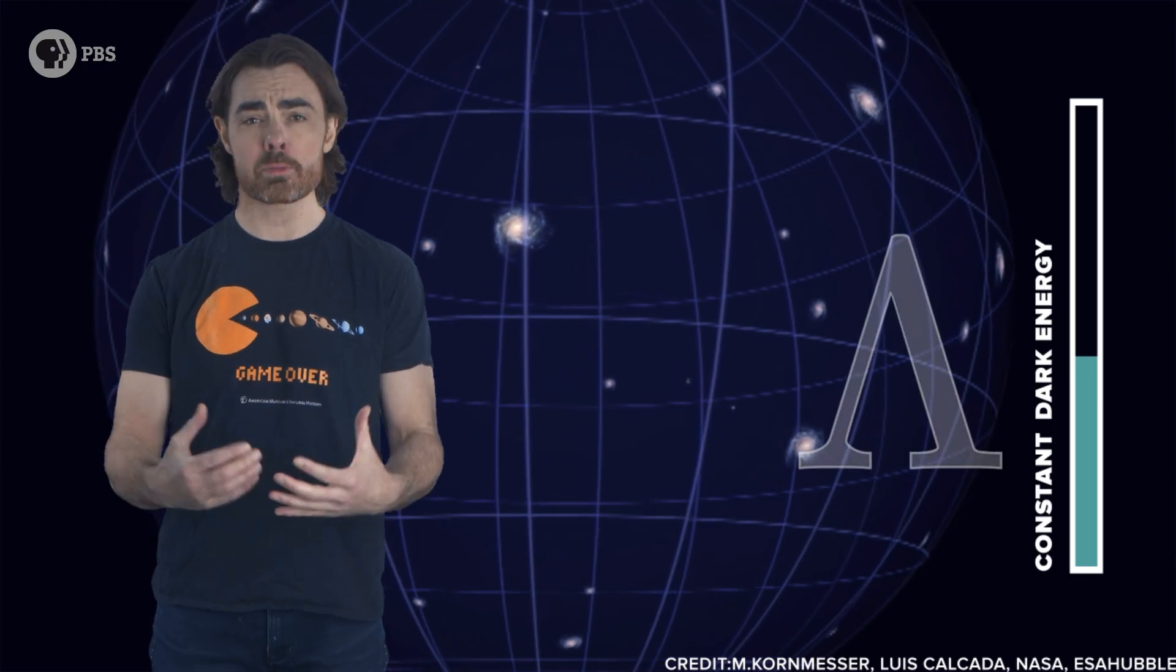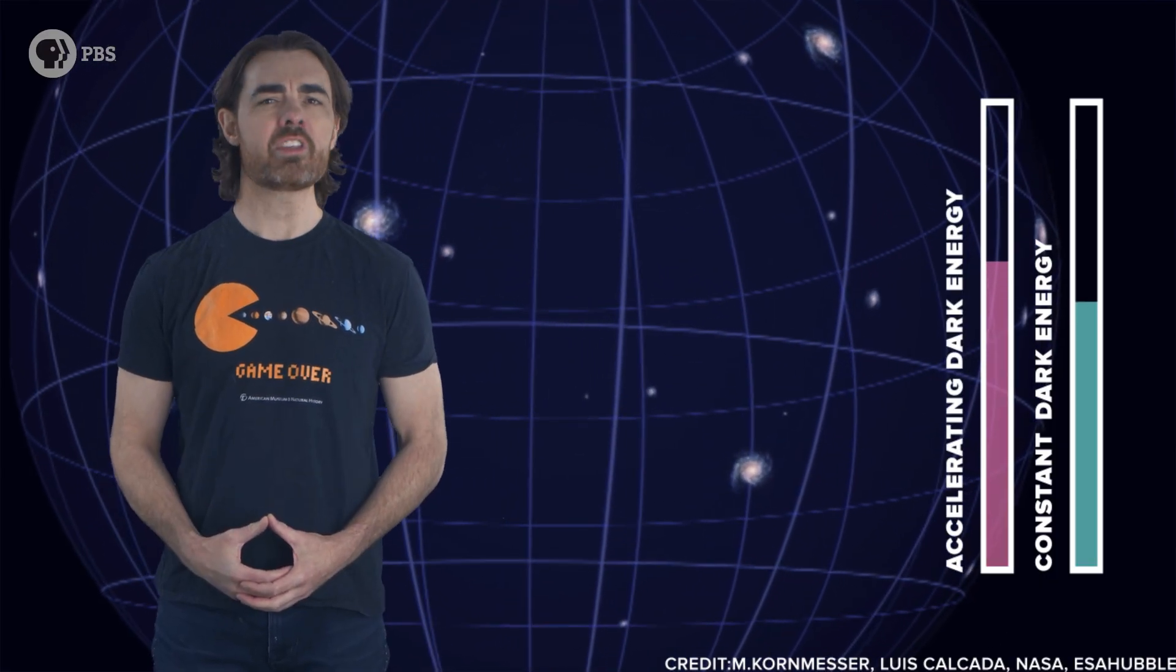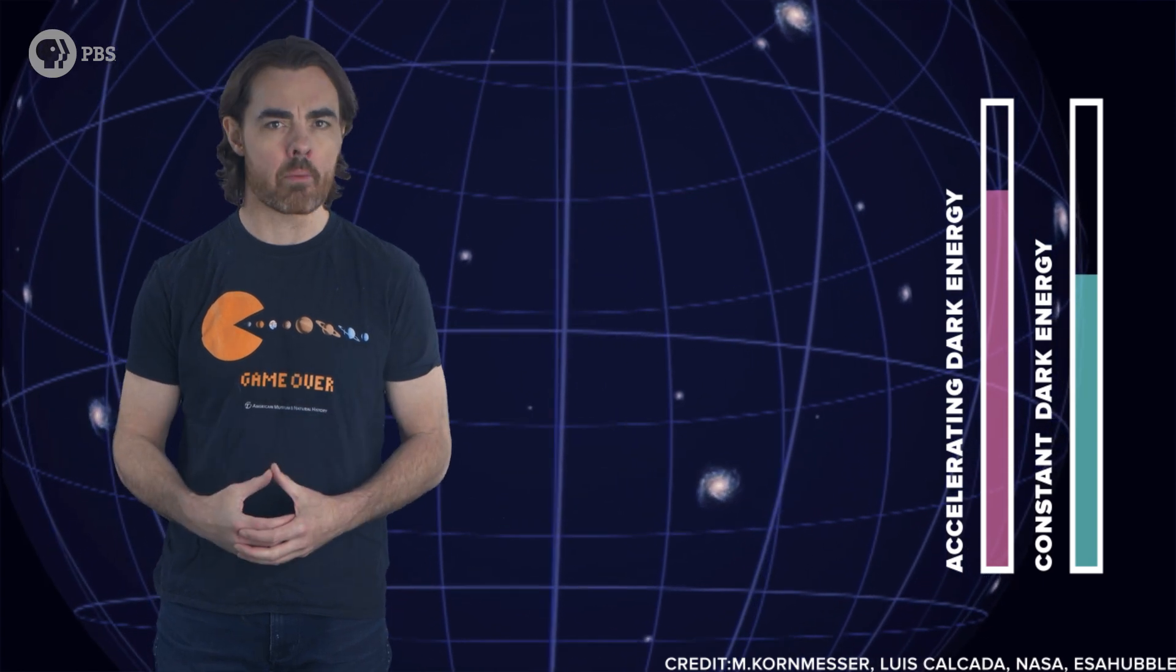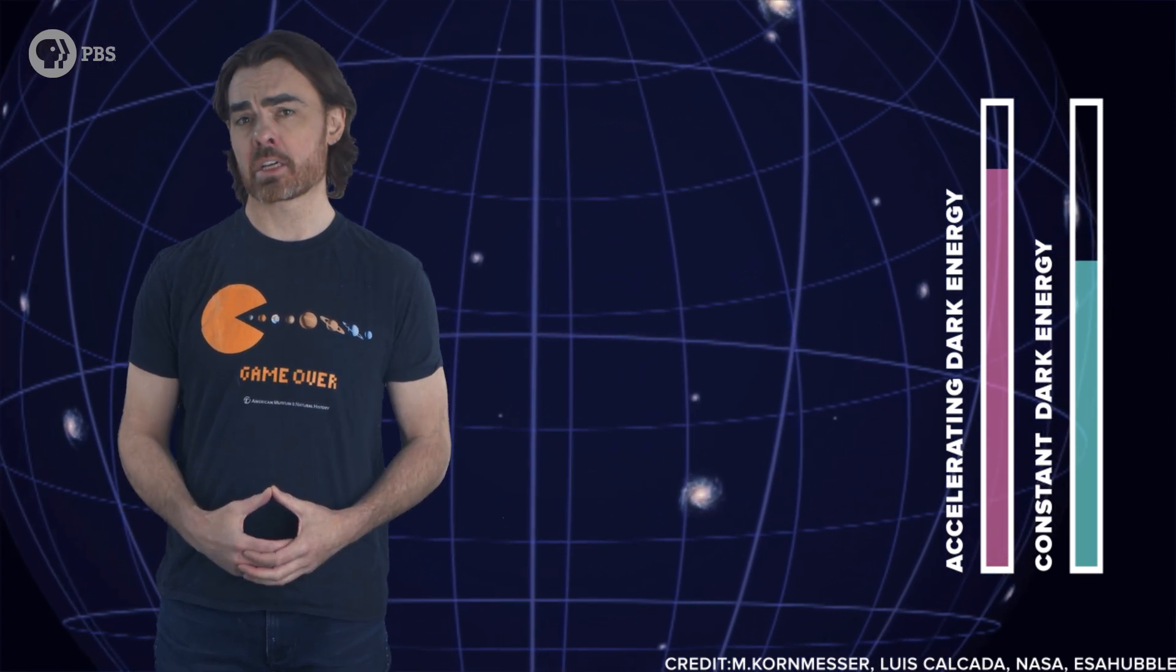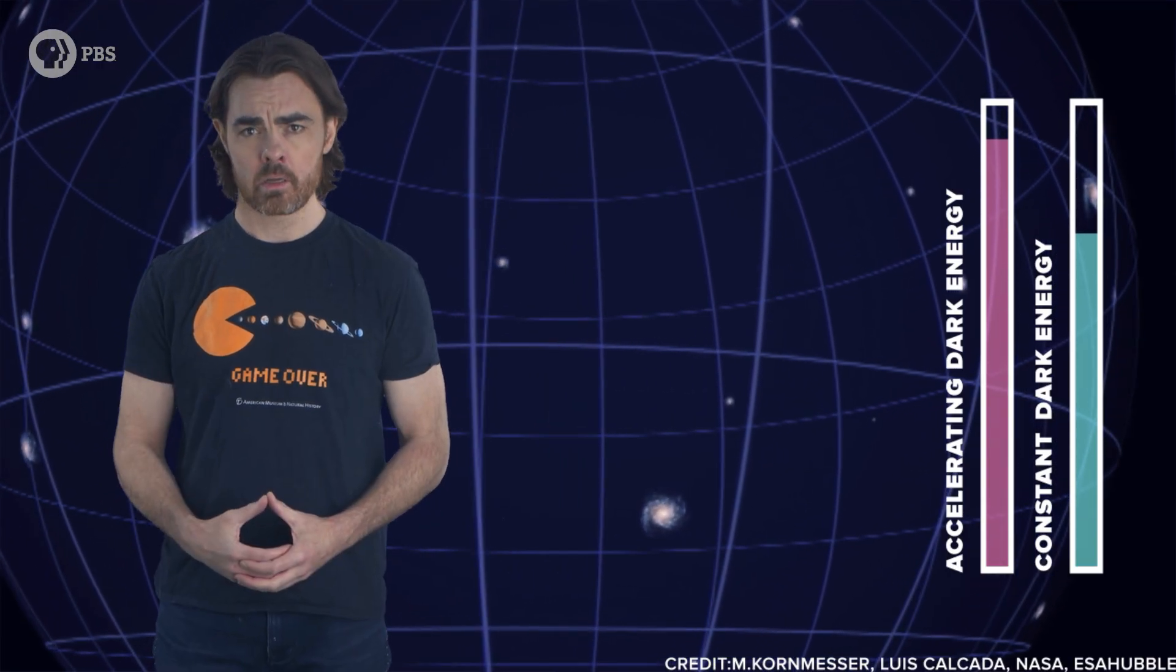Mathematically, we describe a constant energy density with the cosmological constant in the equations of Einstein's general theory of relativity. But what if dark energy is not constant? What if the energy density in each patch of space increases over time? In that case, the acceleration itself would be accelerating. That would be bad.